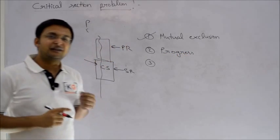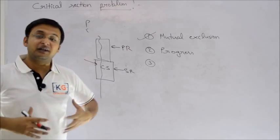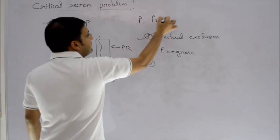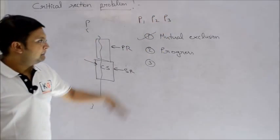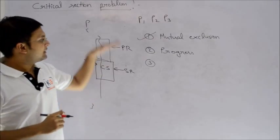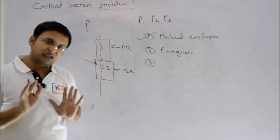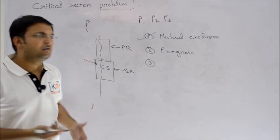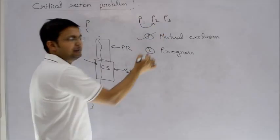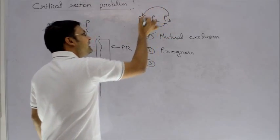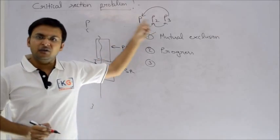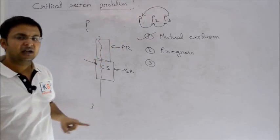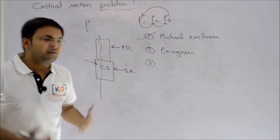Progress is a little complex to understand. Let me take an example. Suppose there are three processes P1, P2 and P3, and we will access the critical section in a mutual exclusive fashion. But can I go in a round robin fashion? If scheduling is round robin, what I'll do is P1 first, then P2, then P3, and this cycle will continue.